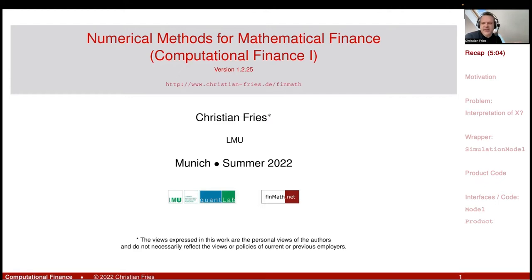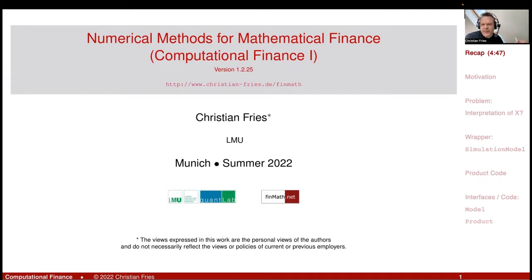You would have dedicated responsibilities: random number generation, ground motion, whatever. The question is which parts should belong together. For example, for a model of an SDE, the specification of the numeraire and the specification of the drift are strongly related, so they should be in the same class or provided by the same interface.